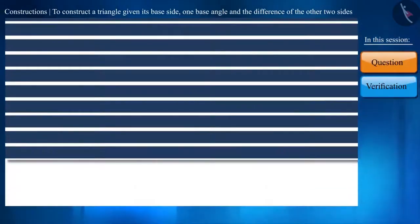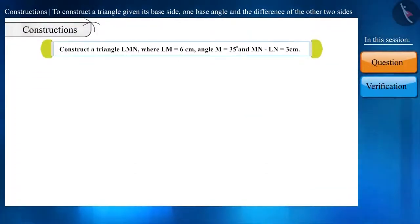So let's start with this question. Construct the triangle LMN, where LM is equal to 6 cm, angle M is equal to 35 degrees, and MN minus LN is equal to 3 cm.